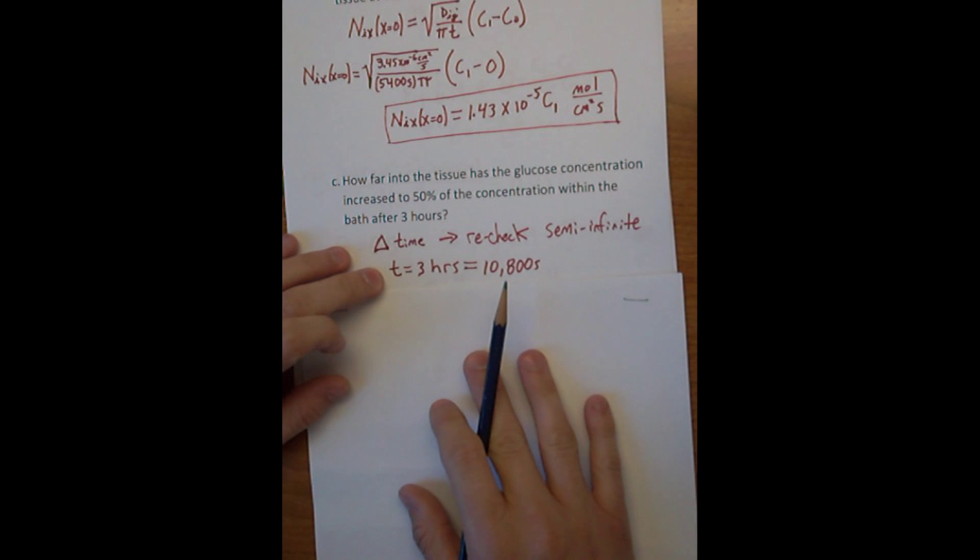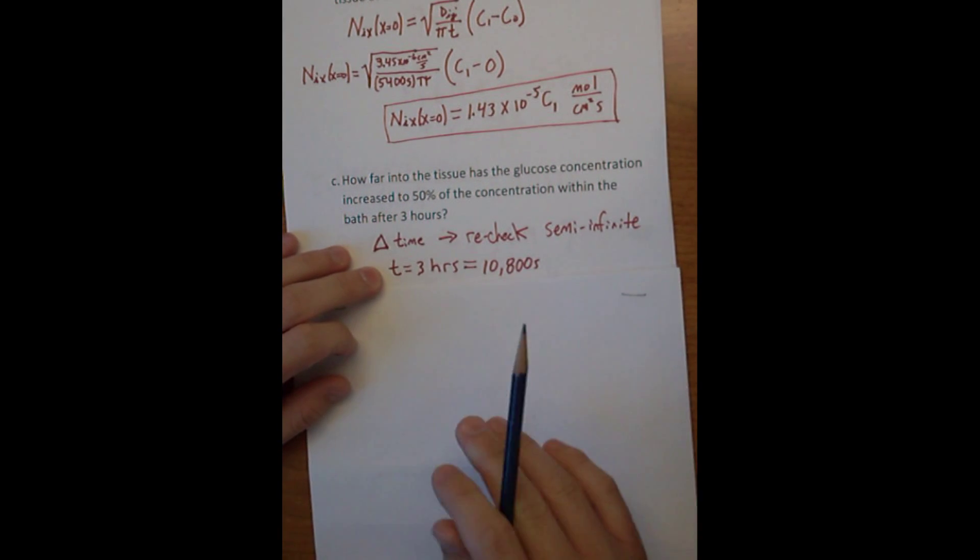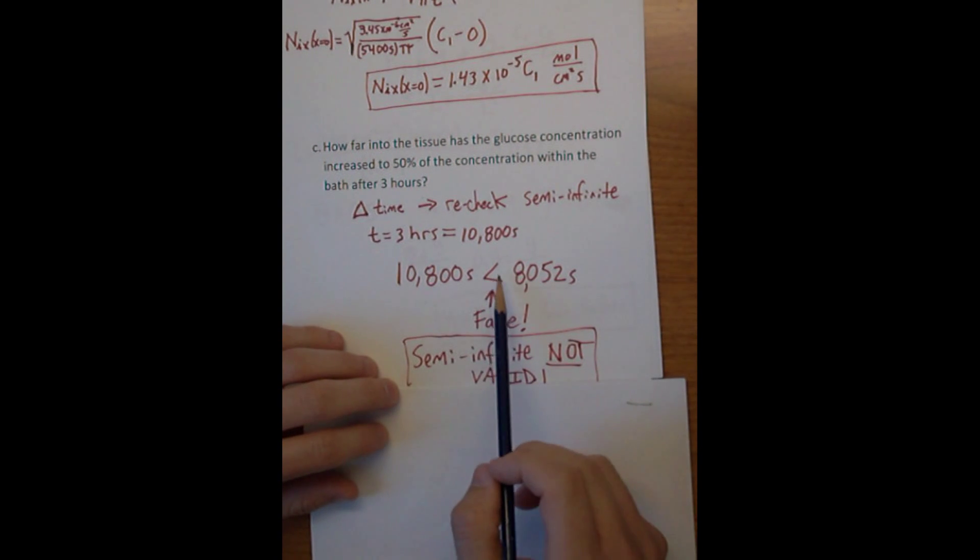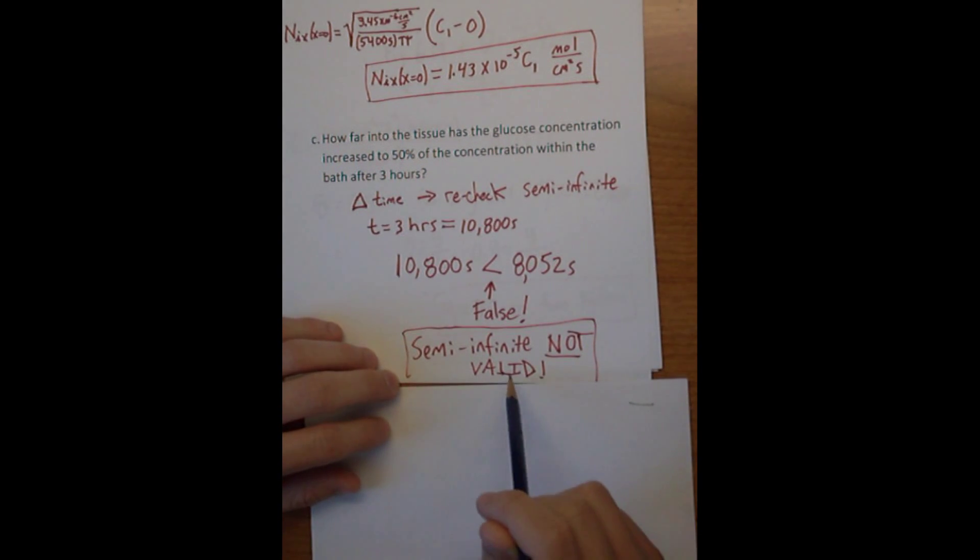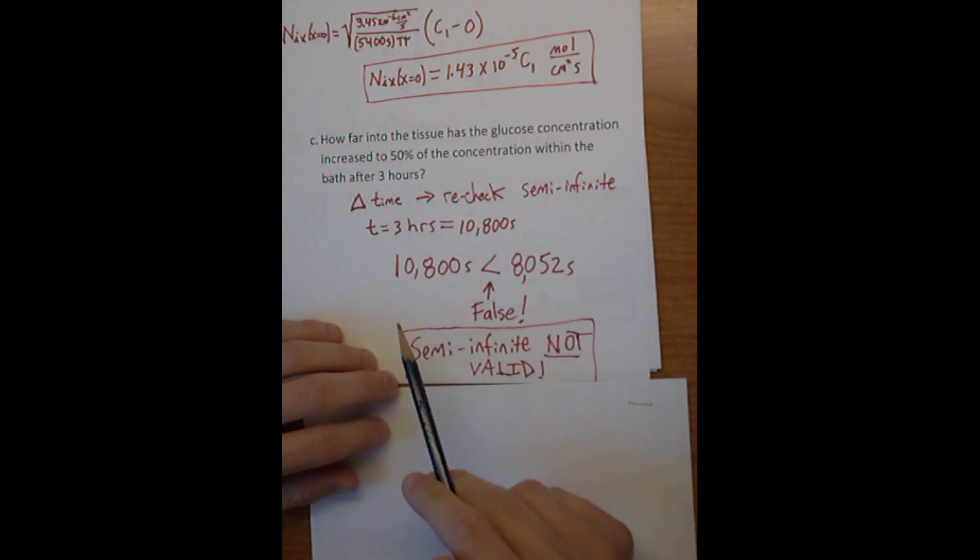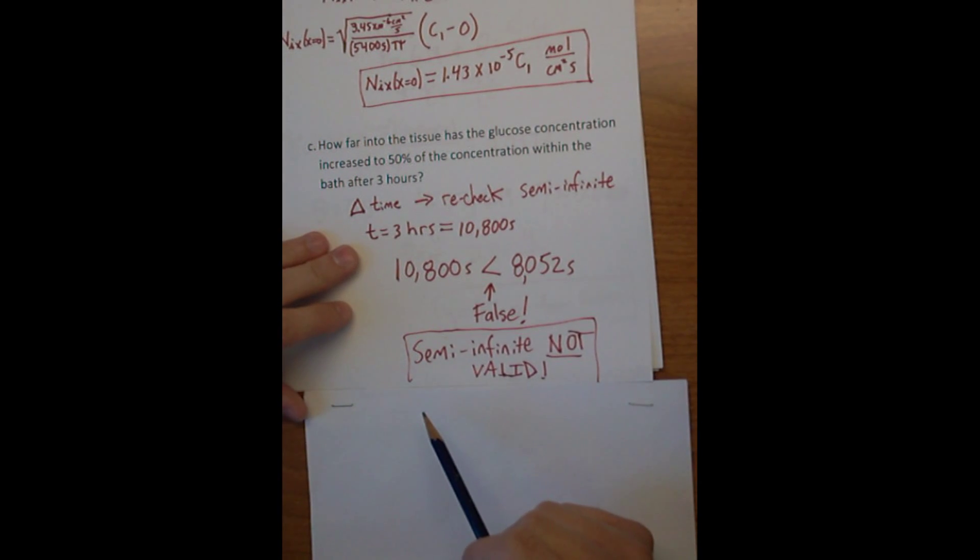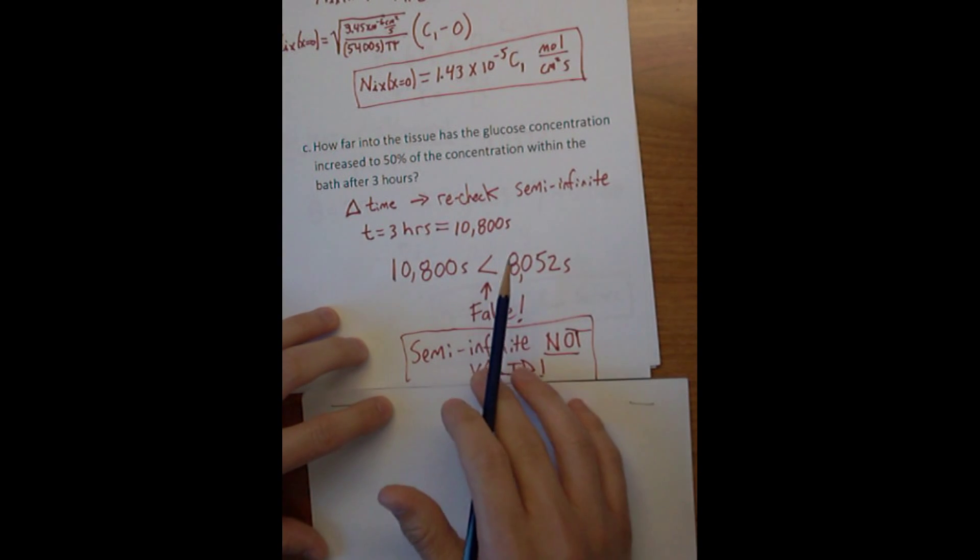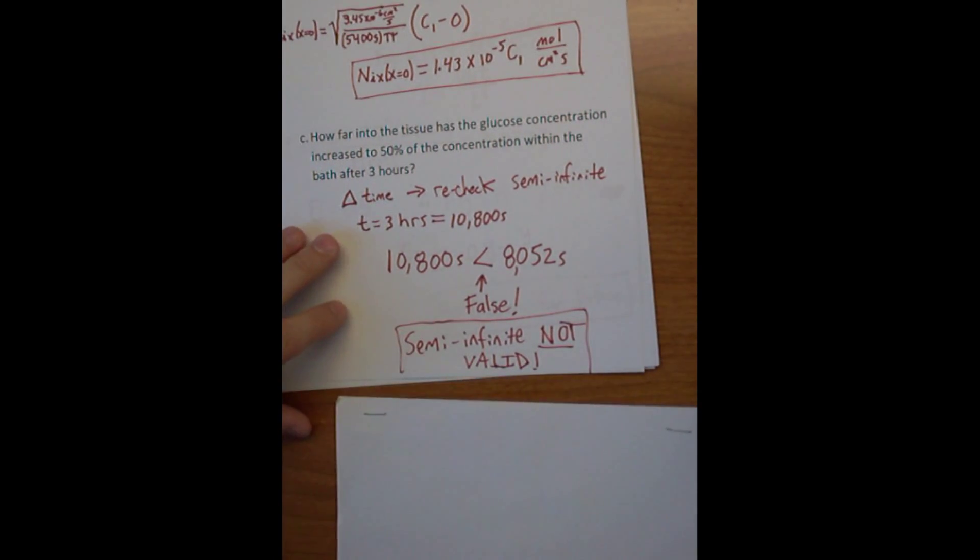So we do that. We find out that the time at three hours is 10,800 seconds, and it's false. Now our time is above the point of 8,052 seconds that we calculated earlier, which was L squared divided by 36 D_ij. Therefore, the semi-infinite approximation is not valid. So what are we going to do to solve part C? We have to switch gears and go from using the semi-infinite approximation to being able to solve the PDE of unsteady diffusion in rectangular coordinates.